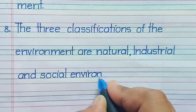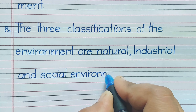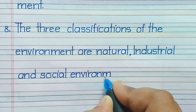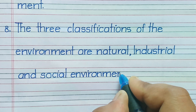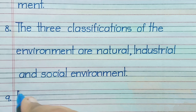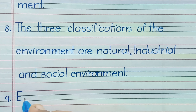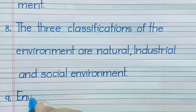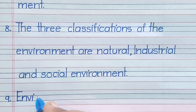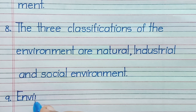Eighth, the three classifications of the environment are natural, industrial, and social environment.